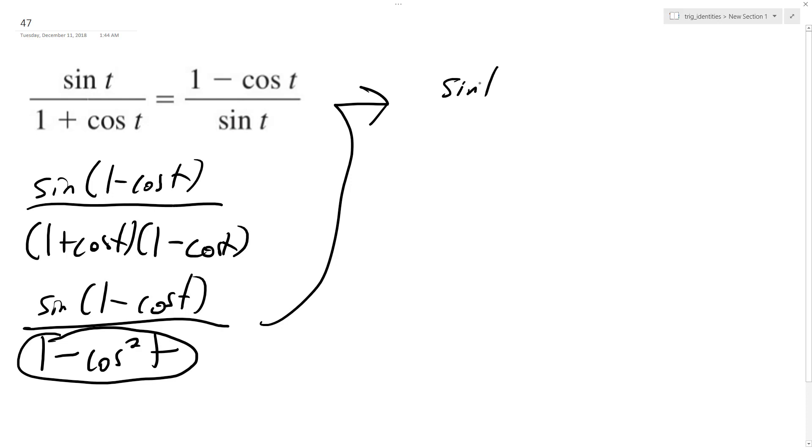So I get sine t times 1 minus cosine t, and this becomes sine squared t. So one of these sine squared t's, it just becomes sine t, cancels out, and we just get 1 minus cosine t on top. And that's how we end up with 1 minus cosine t